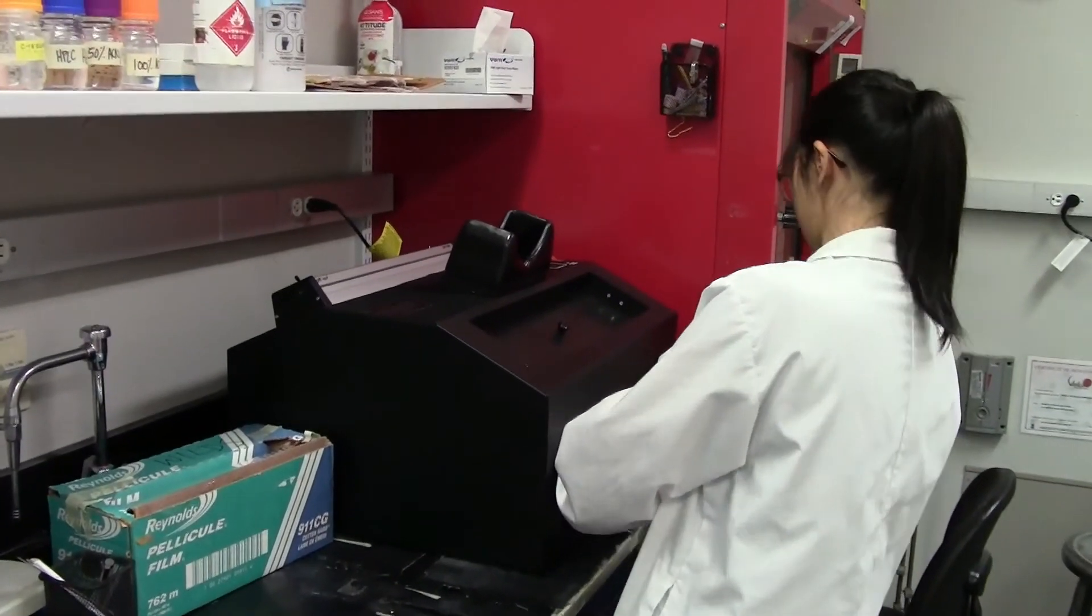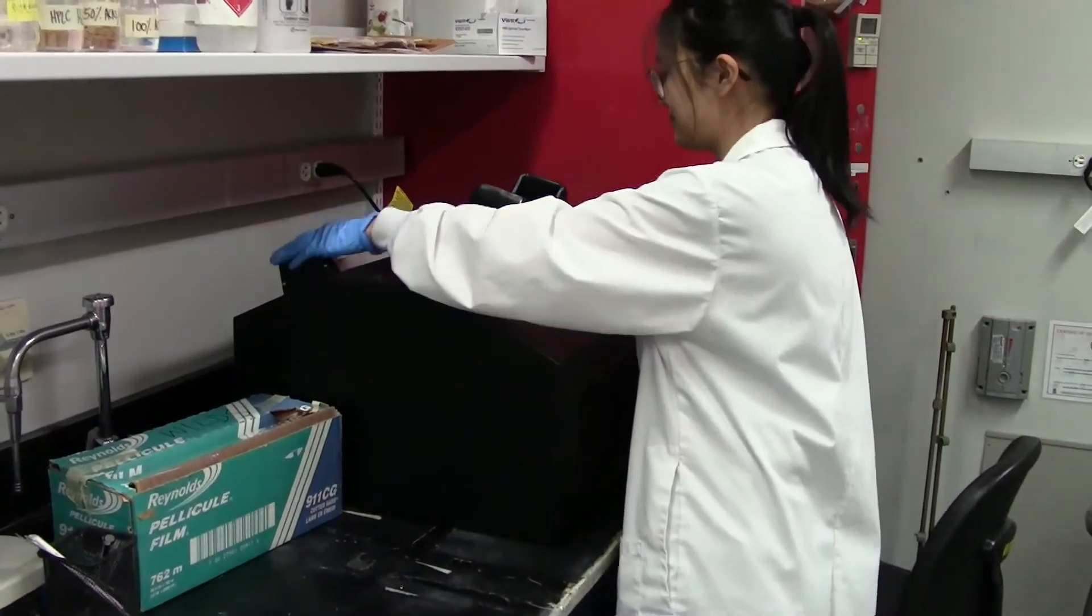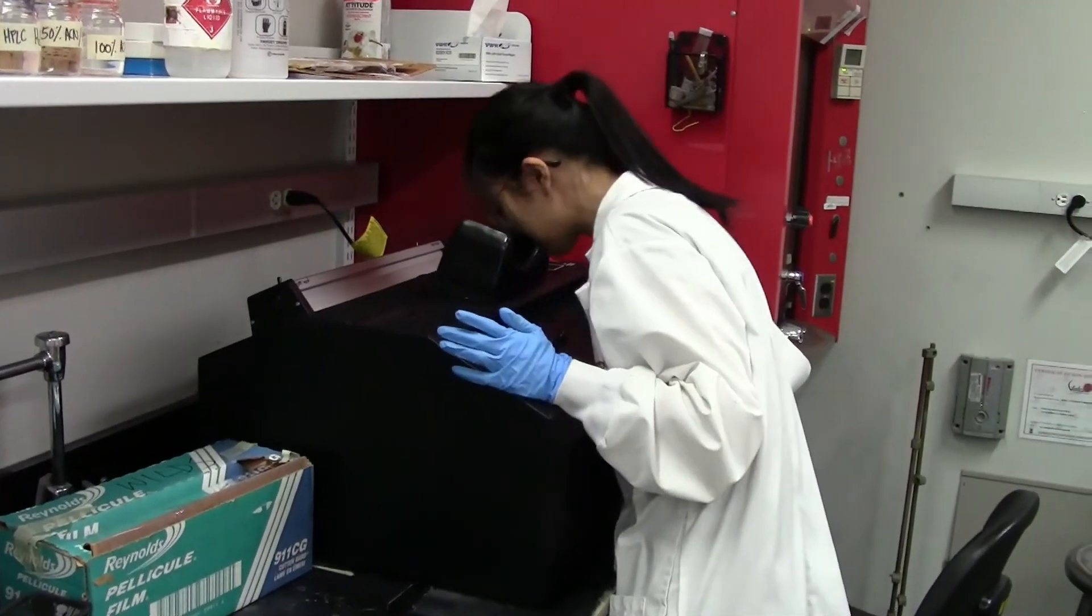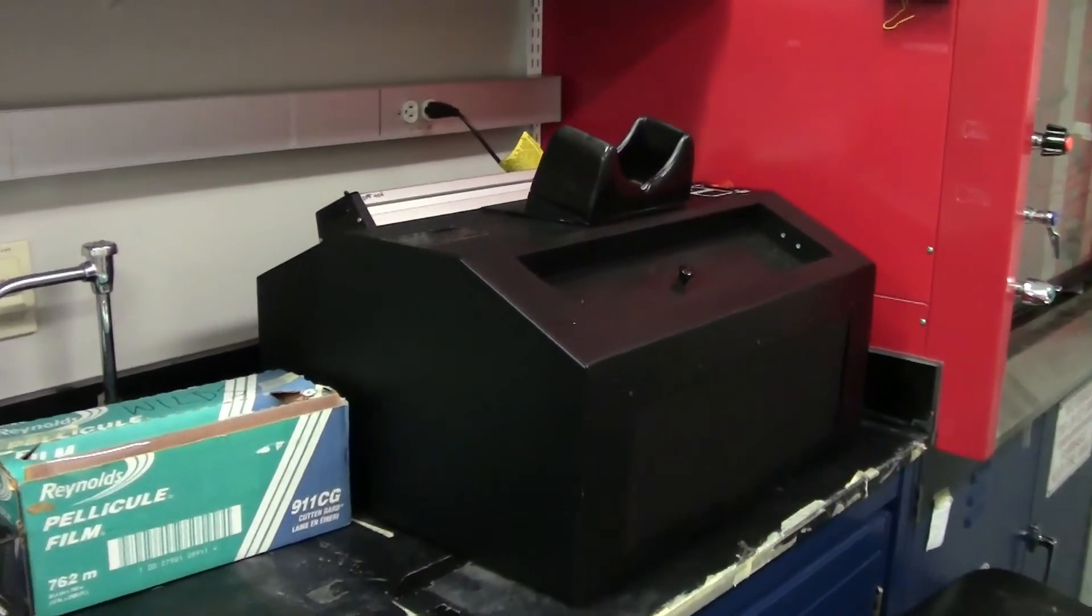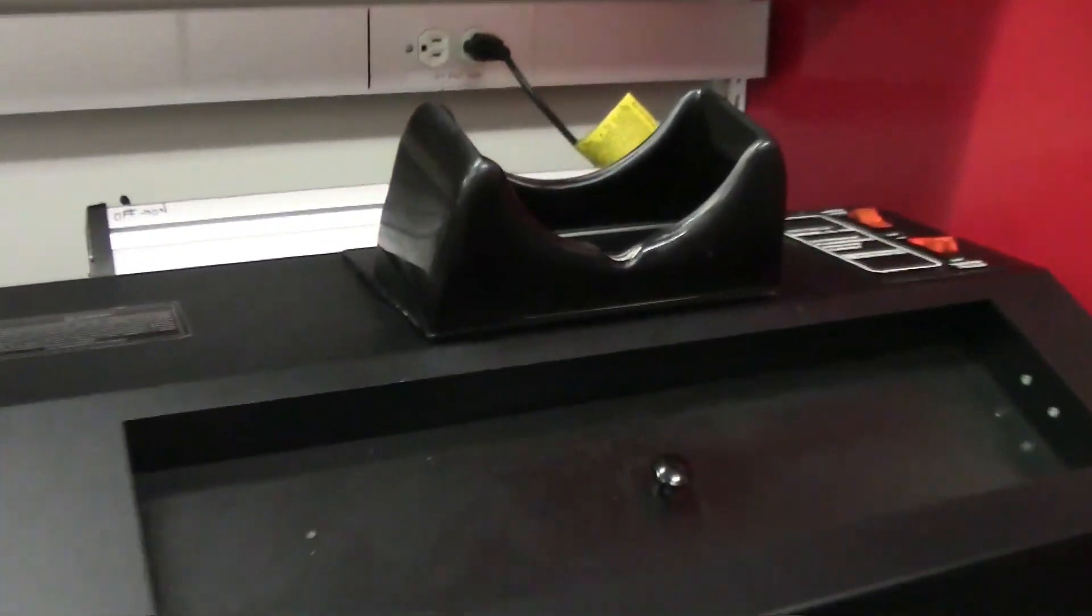Finally, you can visualize the gel by placing it in the dark under shortwave UV light. And that wraps up the video for how to set up and perform polyacrylamide gel electrophoresis. Thank you for watching and best of luck on all your future gels!